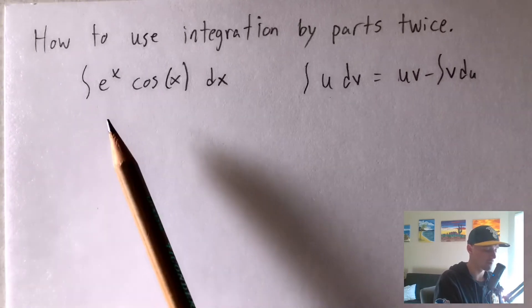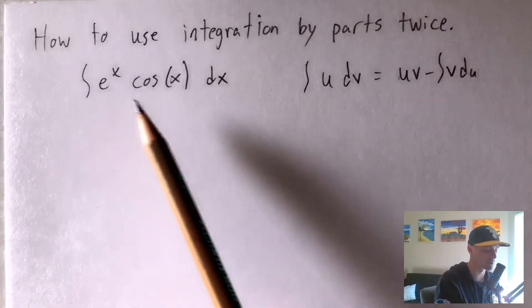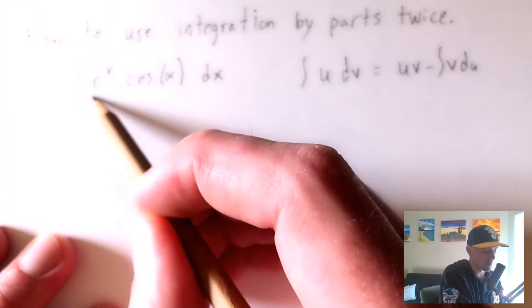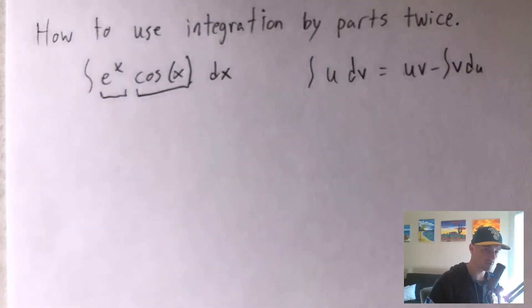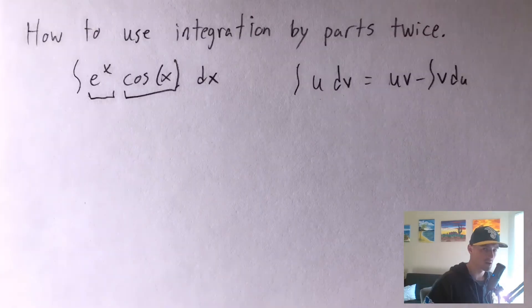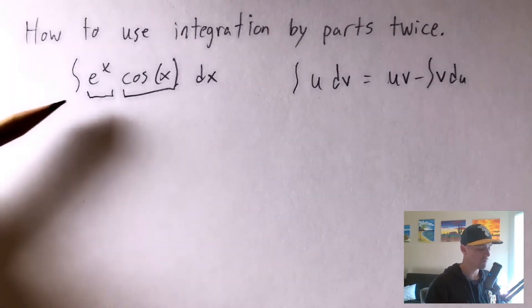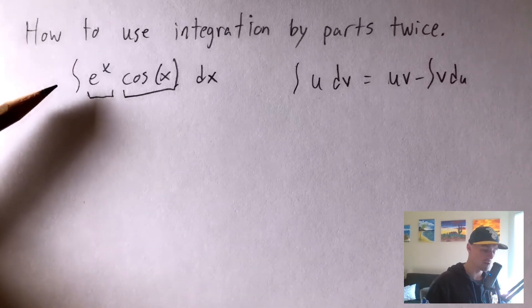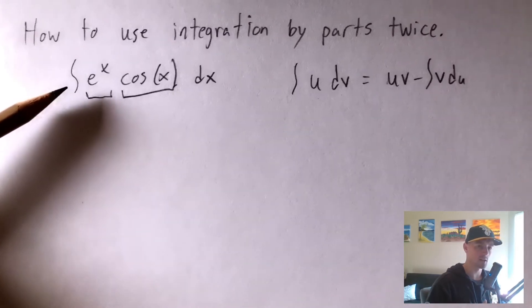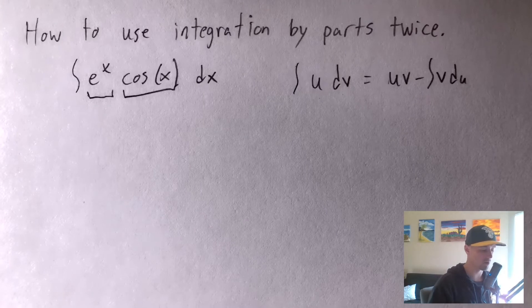In this example, there isn't really a clear choice for u and dv. Our two pieces are e to the x and cosine of x. If we look at e to the x, its derivative is just e to the x, and its antiderivative is also e to the x. So this piece isn't going to give us any indication of whether we'd rather differentiate or integrate it — we get the same thing either way.